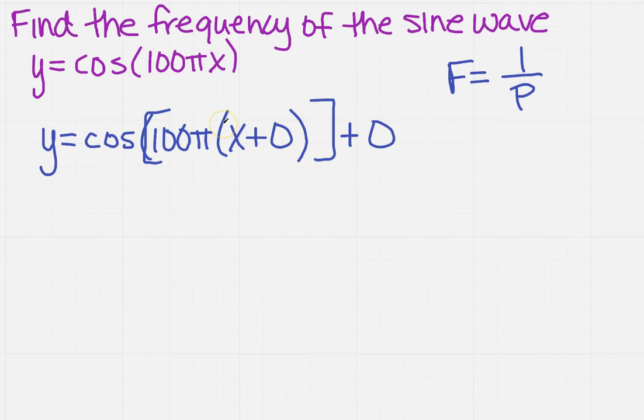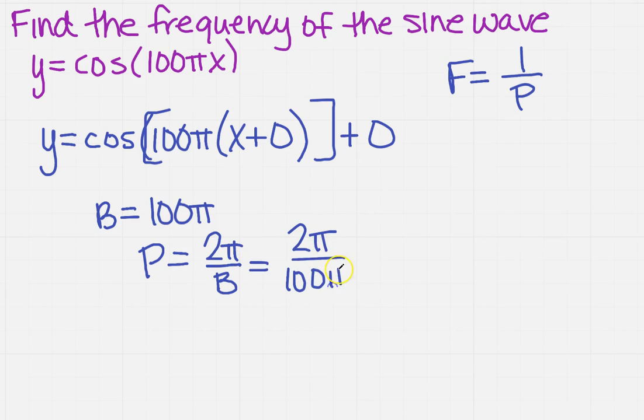Now I know what b is. b equals 100π, and the period for cosine is 2π over b, so this is 2π over 100π, which gives me 1 over 50. So that's P.